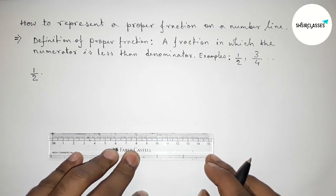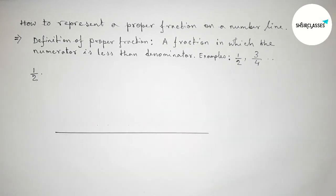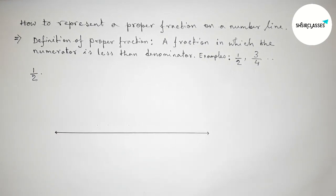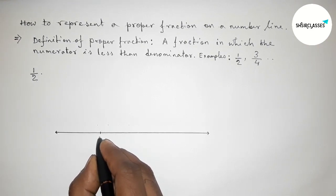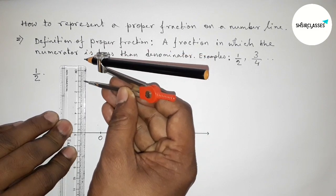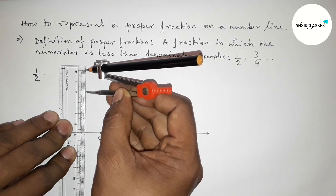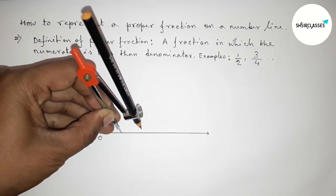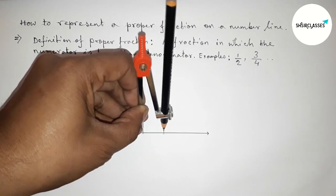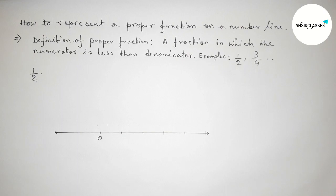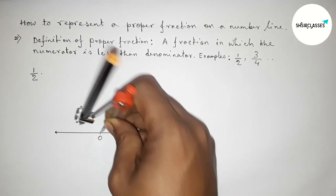First, we have to make a number line. Draw a line of any length and put arrow marks on both sides. Mark the starting number 0. I am taking a 2 centimeter length between each unit — you can take 1, 3, or 4 centimeters as your choice. We create the number line with the help of a scale, compass, and ruler.